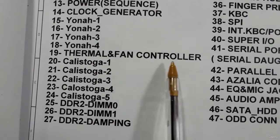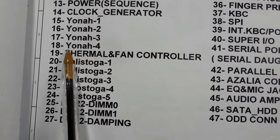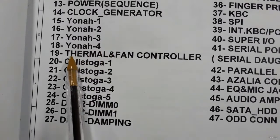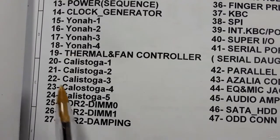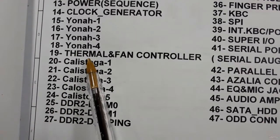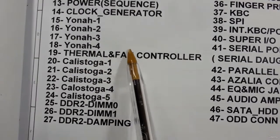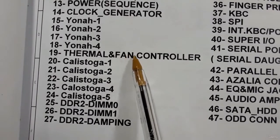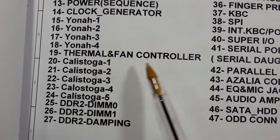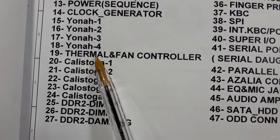Here we have the thermal fan controller. This is an IC or component that controls the heat of the processor. When the heat of the processor increases, it sends a signal to the fan to increase the fan speed, and vice versa.